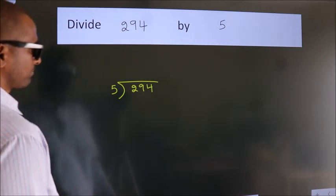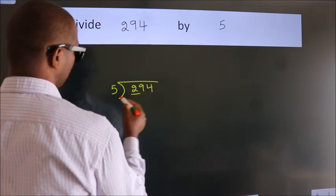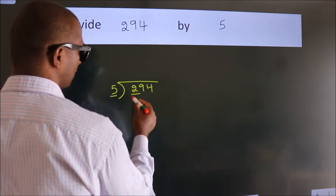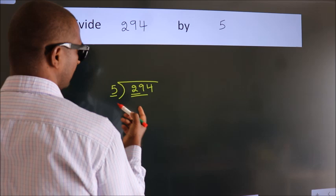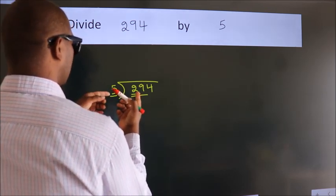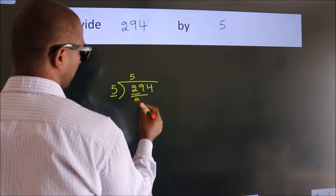Next, here we have 2. Here 5. 2 is smaller than 5, so we should take two numbers: 29. A number close to 29 in the 5 table is 5 fives, 25.